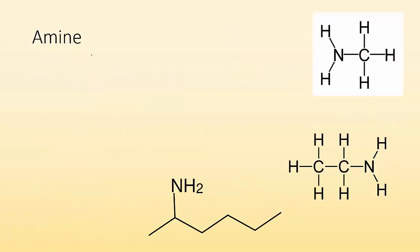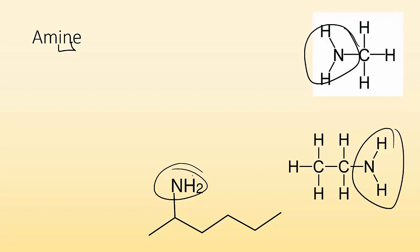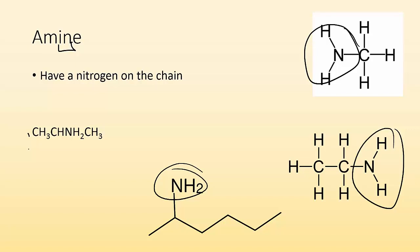Amines — you're looking for a nitrogen. That's the N in amine. Anywhere there's a nitrogen group, you have an amine. It has to have a nitrogen on the chain. In the condensed structural form you can see the N in the chain — so it is an amine.